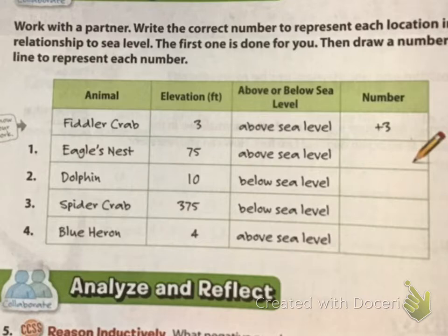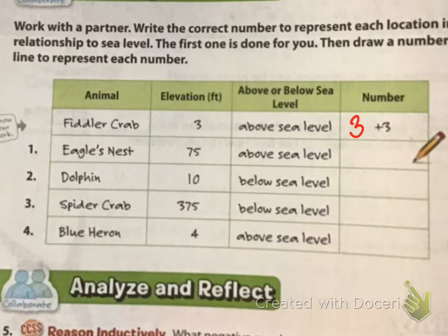If the fiddler crab was 3 feet above sea level, we would write positive 3. In fact, we would actually just write 3 because nobody really cares about the positive sign. I'm going to call on people. Eagle's nest — I want to know the number for eagle's nest. Hannah?